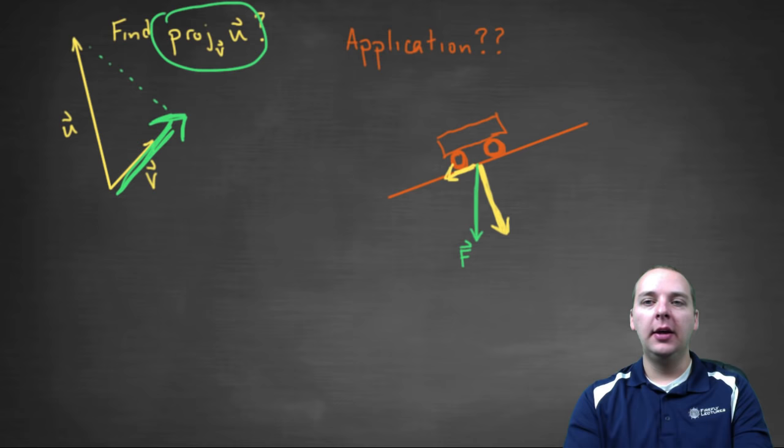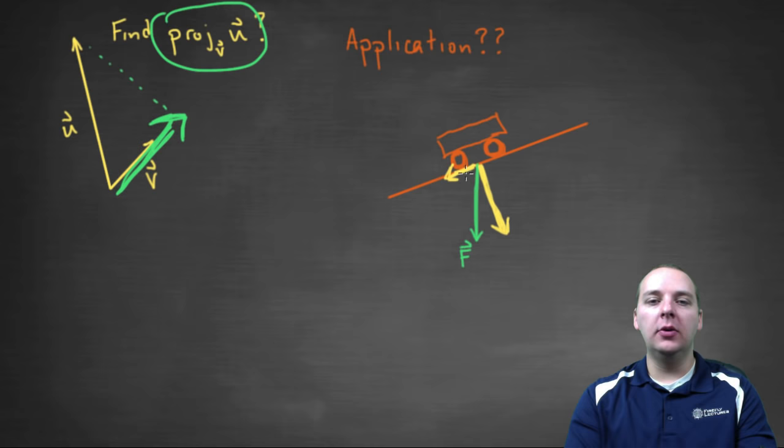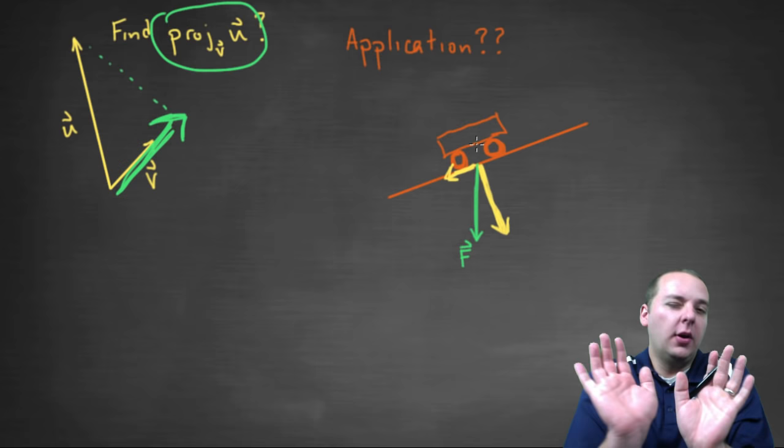But a very common question that we see a lot dealing with these projections is, how much force would be required to hold this box up on the hill? So if this box on the wheels weighed 200 pounds, it obviously wouldn't take 200 pounds to hold it up on the hill, because the hill is helping you a little bit.